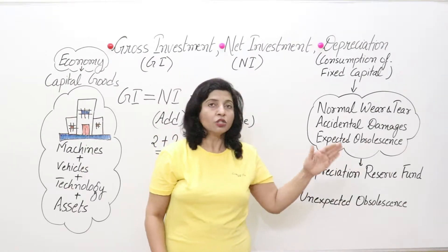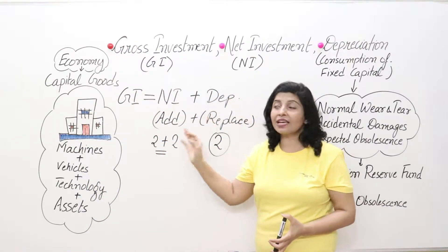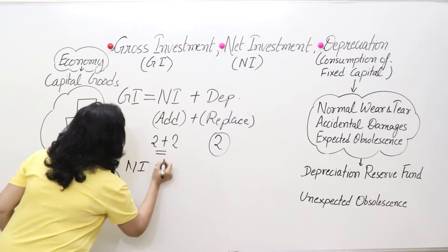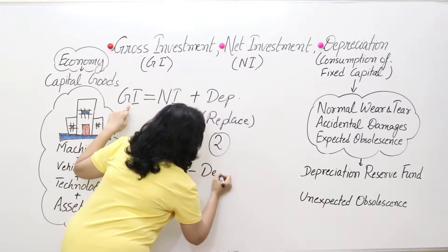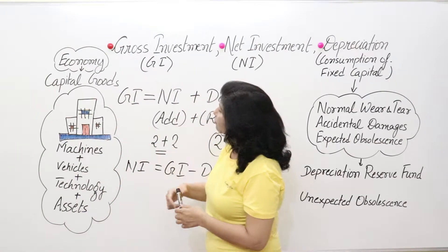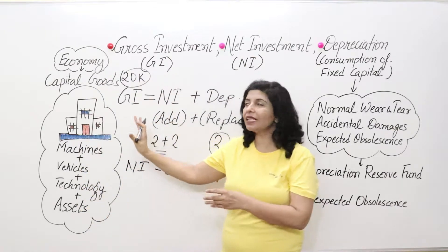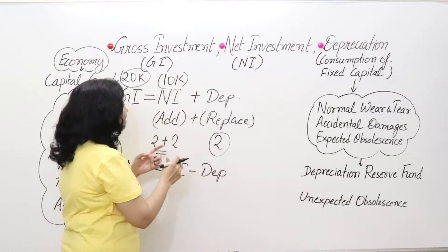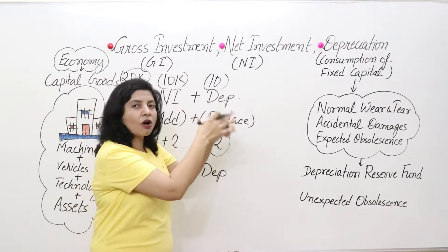So the formula is: gross investment equals net investment plus depreciation. And net investment equals gross investment minus depreciation (GI minus dep). For example, from 20,000 machines (your gross investment), 10,000 machines are used for net investment (addition to capital stock) and 10,000 are used for replacement of existing capital stock.